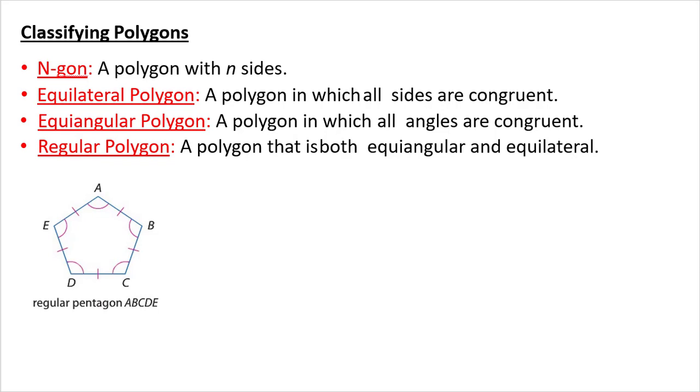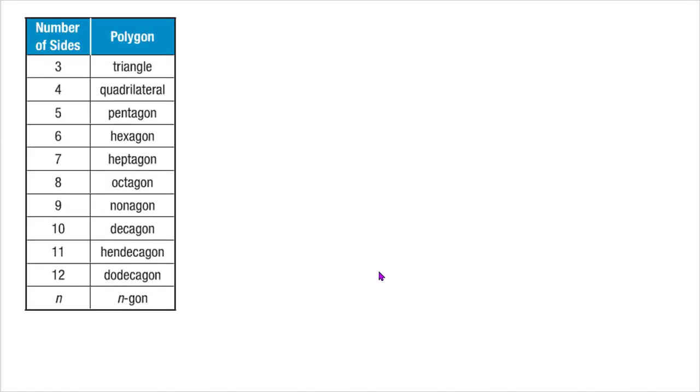A regular polygon is both equiangular and equilateral. So here I have all of my angles are equal. All of the sides are equal. Also, pause, write this chart down.